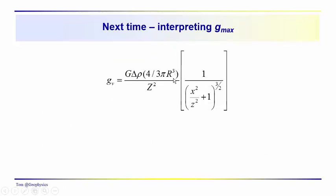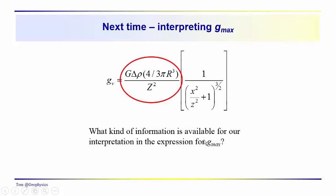Next time, we're going to interpret Gmax and show how we can use this parameter in this equation in order to get additional information about the feature of interest, the geologic feature that's producing the anomaly that we're seeing in our data that we think could be associated with a localized, roughly spherically symmetric distribution of density contrast. That would be on tap for next time. Hope you join me then.